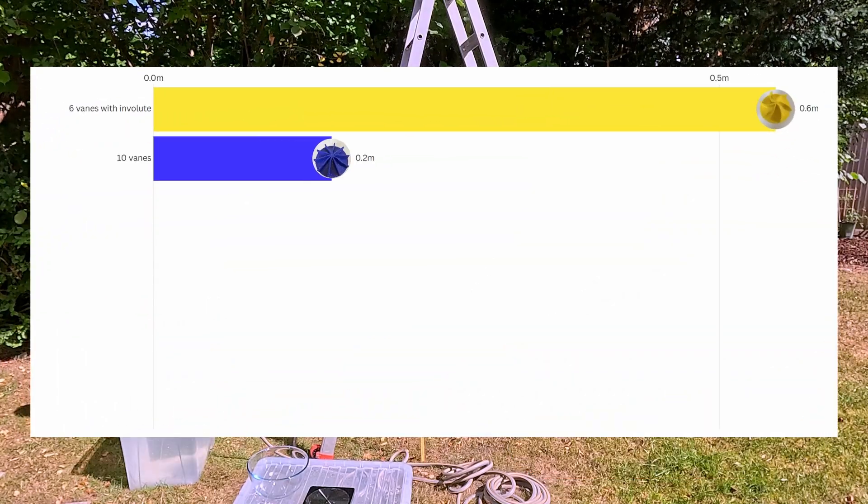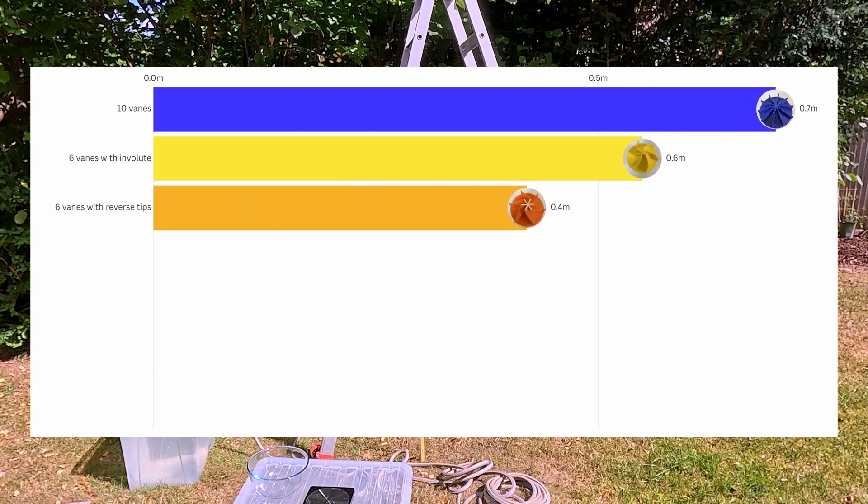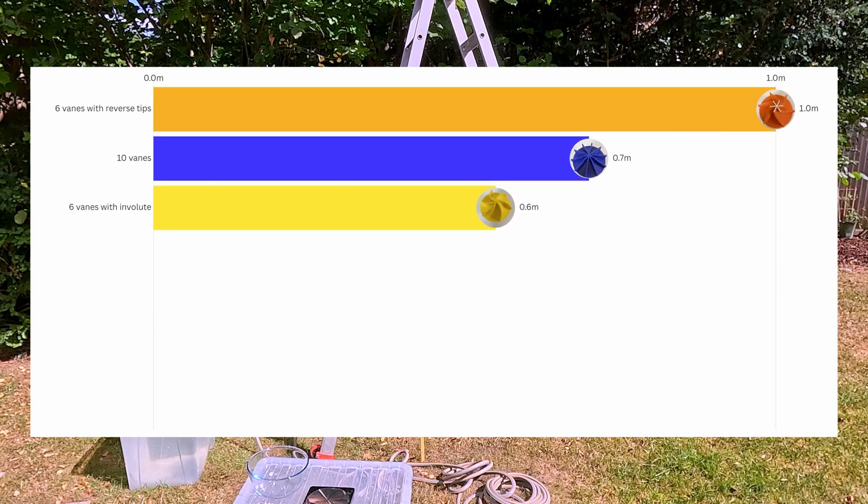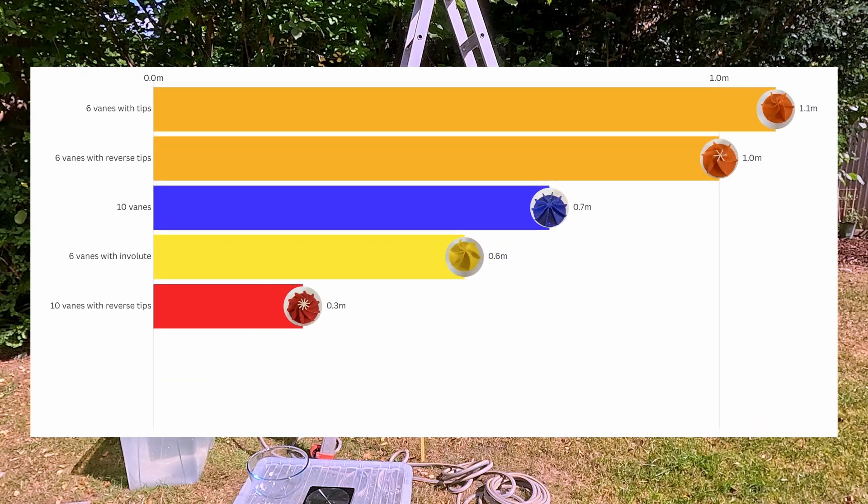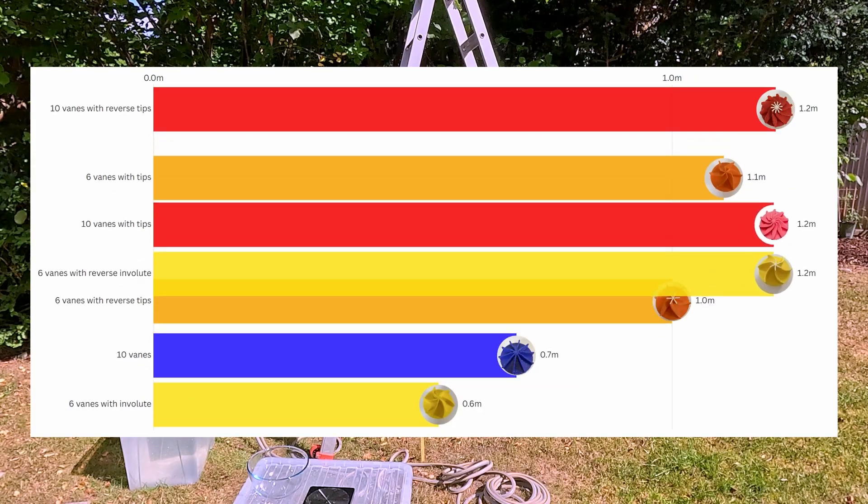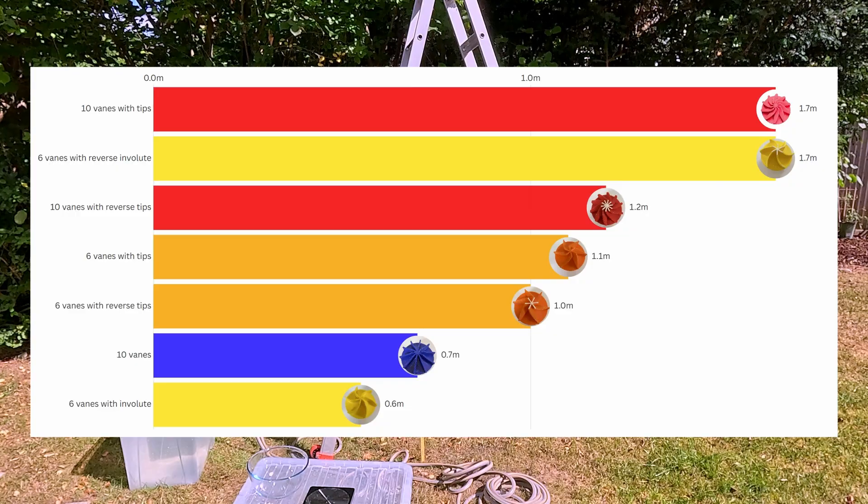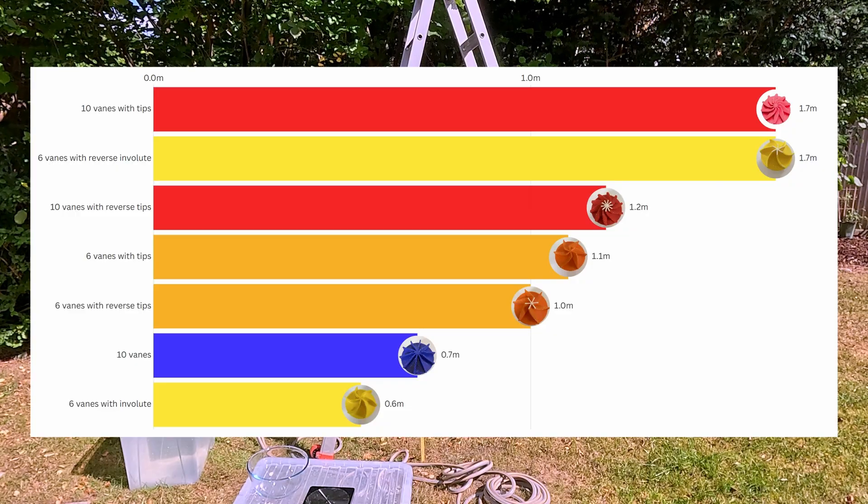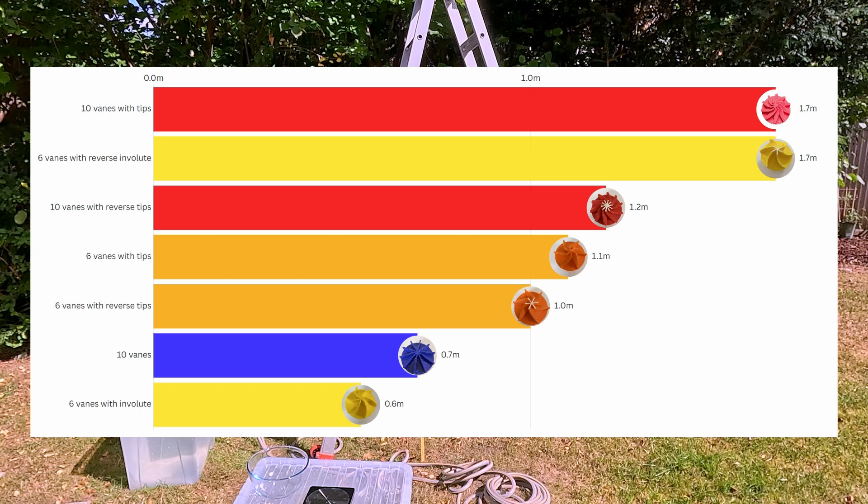Let's see how the different impellers stack up. So right at the bottom of the table, we've got yellow with 0.6 meters, then blue with 0.7 meters, then orange white with one meter. Orange is a little bit higher with one meter, then 1.2 meters for the reverse tip red impeller. And way out in front at a tie is red and yellow white. So that's the 10 vein with tips and six veins with reverse involutes.